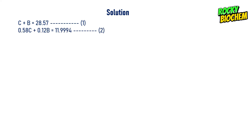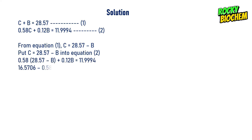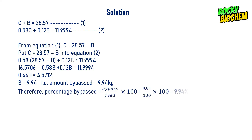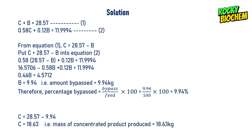With B = 9.94 kg, the percentage bypass = (9.94 / 100) × 100 = 9.94%. Substituting B back: C = 28.57 − 9.94 = 18.63 kg. Therefore, the mass of concentrated product produced is 18.63 kg per 100 kg of fresh juice fed, and 9.94% of the feed bypasses the evaporator.